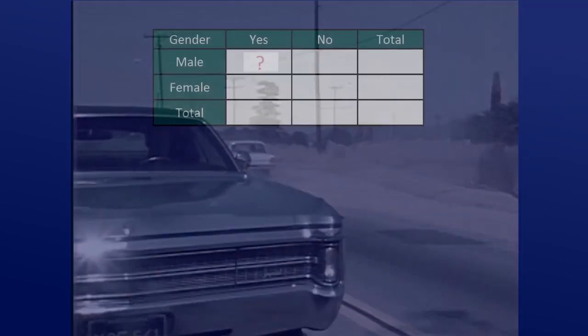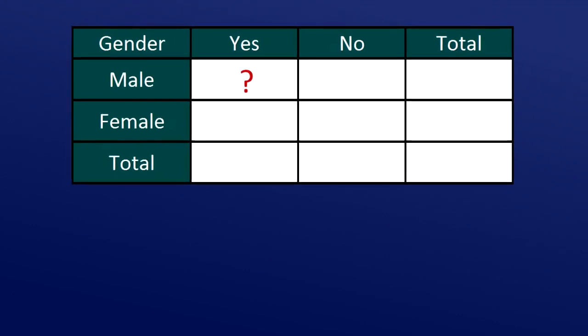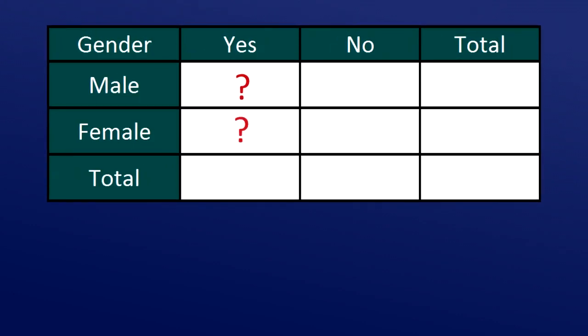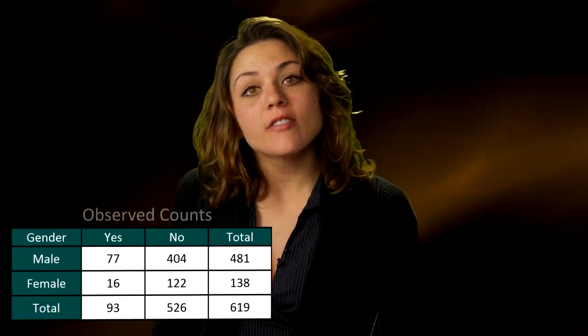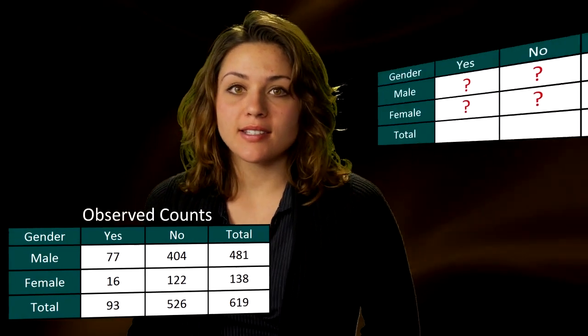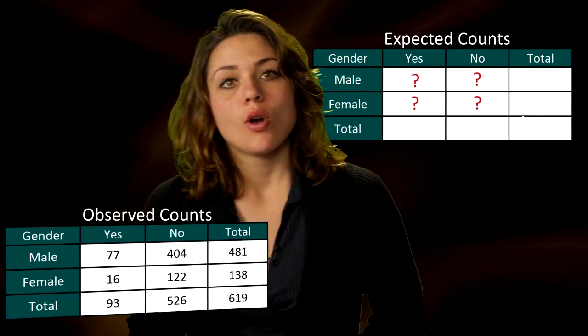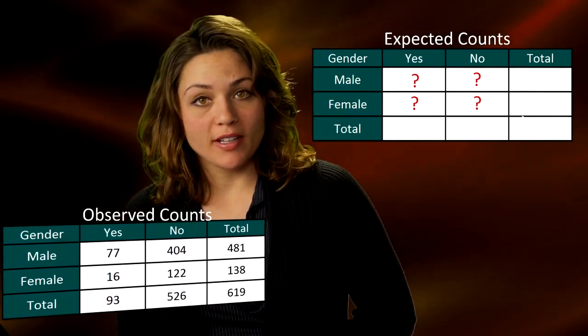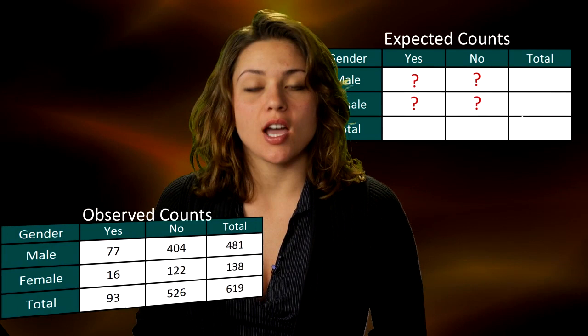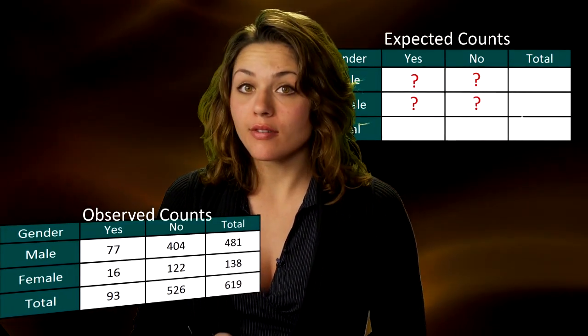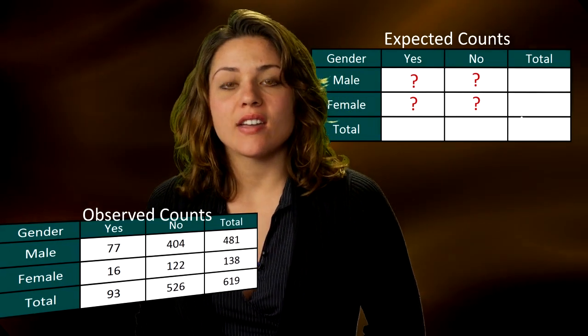We'll also ask the same kind of question about the other three cells in our table. If the null hypothesis were true, how many female drunk drivers would we expect to see instead of 16? How many non-drunk driving males would we expect to see instead of 404? How many non-drunk driving females would we expect to see instead of 122? In other words, we will have two sets of counts, the observed counts that is the data, and the expected counts if the null hypothesis were true. We will measure how far the observed counts are from the expected ones. We will base our decision on the size of the discrepancy between what we observe and what we would expect to observe if the null hypothesis were true.